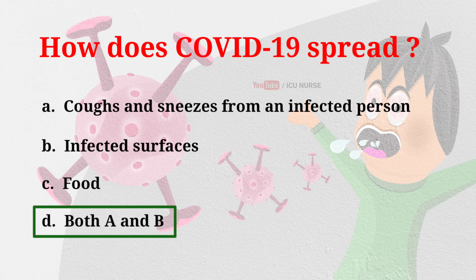When people with COVID-19 cough, sneeze, sing, talk, or breathe, they produce respiratory droplets. These droplets can be inhaled or land in the mouth of someone close by. Respiratory droplets can also land on surfaces and objects. It is possible that a person could get COVID-19 by touching a surface or object that has the virus on it and then touching their own mouth, nose, or eyes. Spread from touching surfaces is not thought to be a common way that COVID-19 spreads.